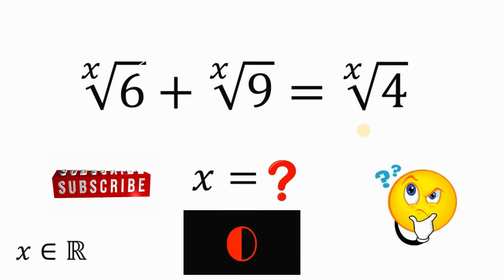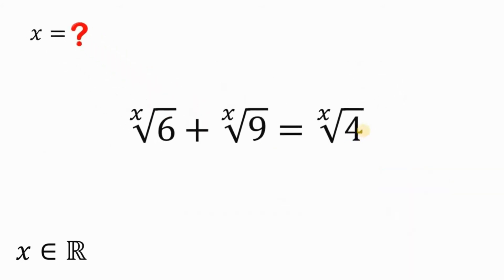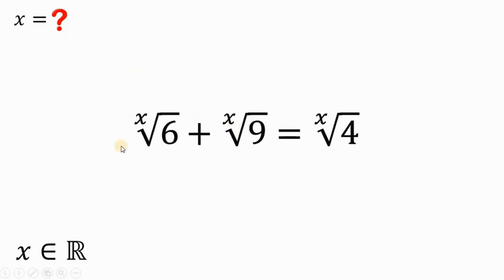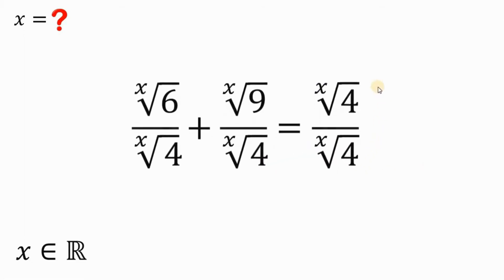Let's answer this question together. We have here x root of 6 plus x root of 9 equals x root of 4. There are different methods to answer this kind of question, but here's one way to solve it. The first thing to do is to divide all terms by x root of 4. Our goal is to make the right-hand side equal to just 1.